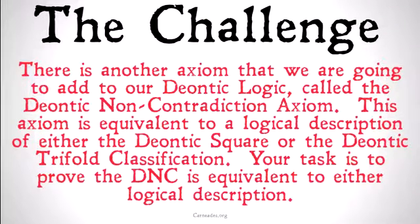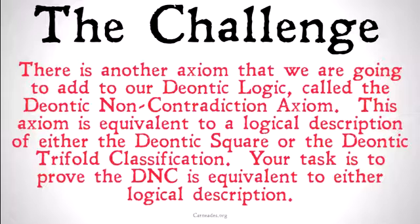There's another axiom we're going to add to our Deontic Logic — it's called the Deontic Non-Contradiction Axiom. This axiom is equivalent to a logical description of either the Deontic Square or the Deontic Trifold Classification. In fact, all three are logically equivalent to each other. Your task is to prove the DNC is equivalent to either logical description, or both of them.